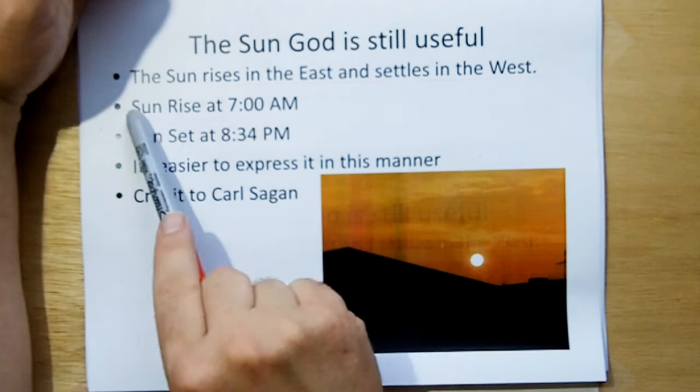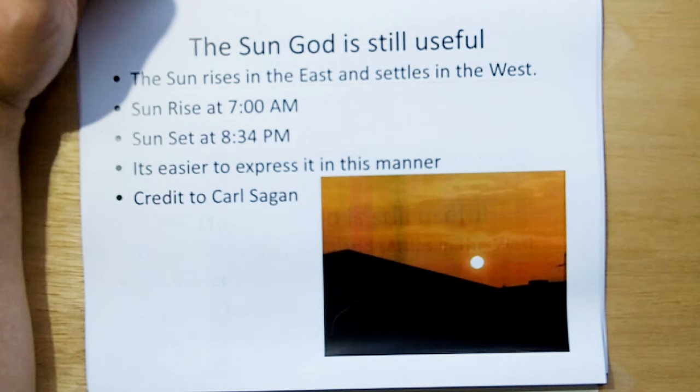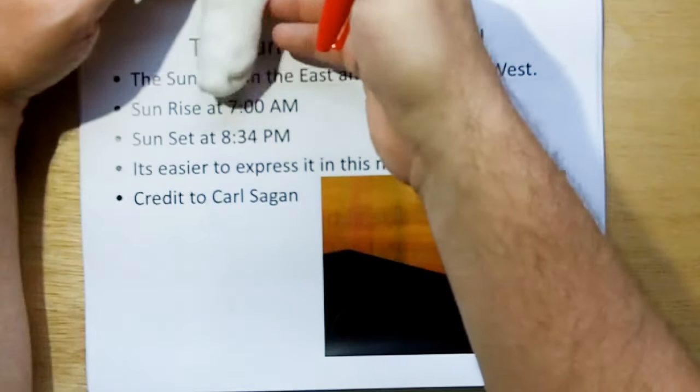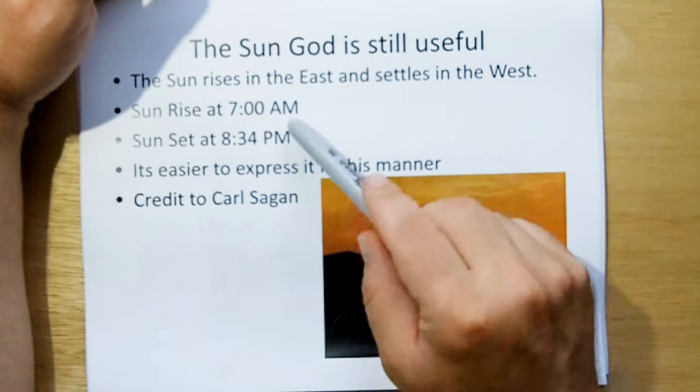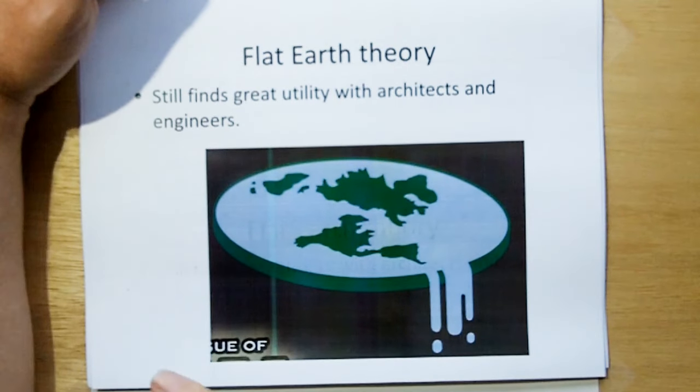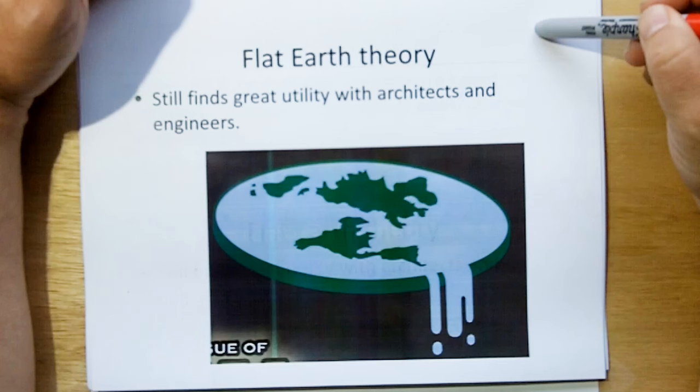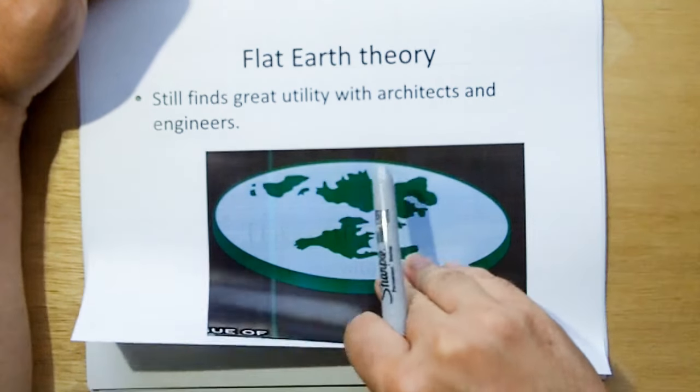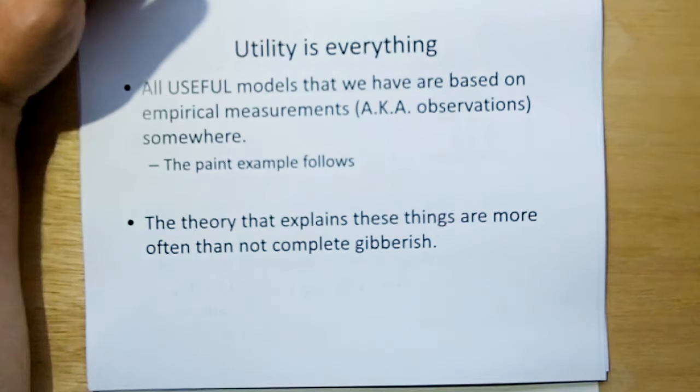The sun god model is still useful. The reason why we do that is because it's easier to express it that way. It's easier for our simple brains to handle that concept. The flat earth theory still finds great utility with architects and engineers. When you're building small structures, small bridges, you don't have to consider the curvature of the earth in those things. You can just assume that there is no curvature of the earth when you do calculations for small buildings and small structures.